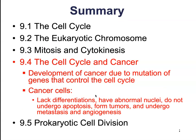We talked about cancer and the cell cycle — how cancer develops due to mutations of genes that control the cell cycle. Know the defining characteristics of cancer cells: they lack differentiation, may have abnormal nuclei, do not undergo apoptosis, can form tumors, and can undergo metastasis and angiogenesis.